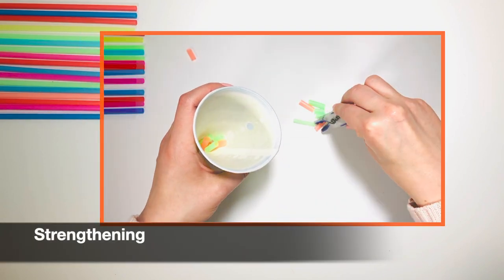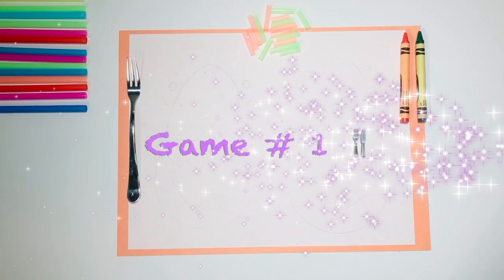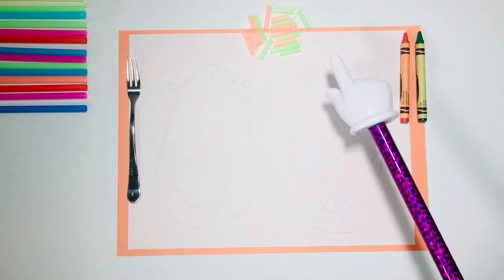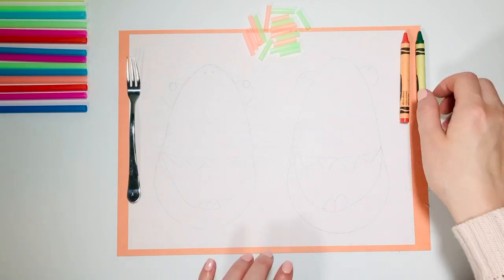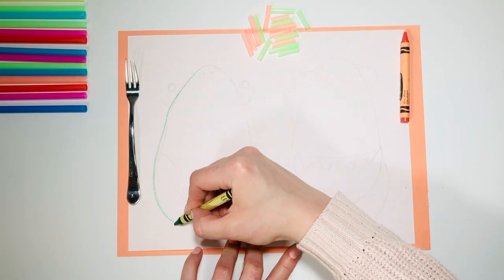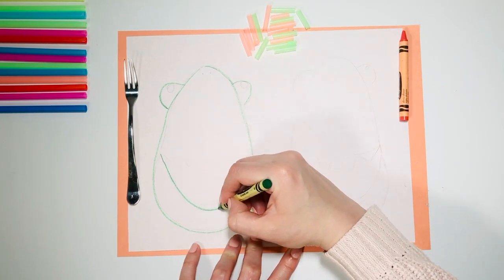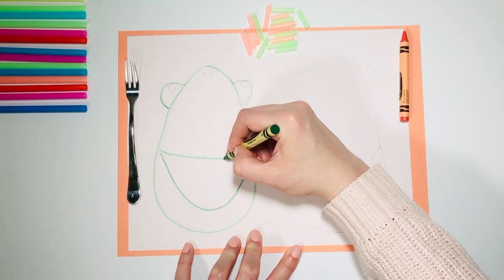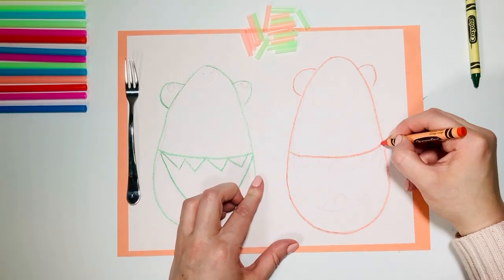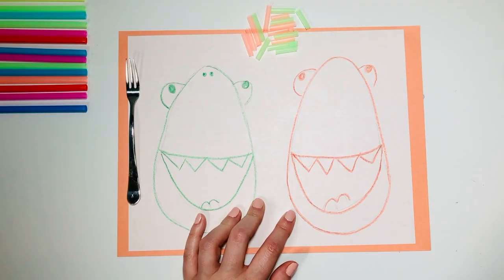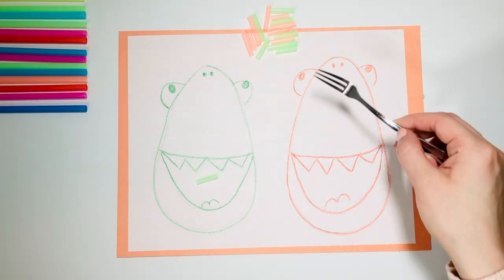For game number one you will need two crayons, cut up straw, a small fork, and a piece of paper. On the paper, draw the character that's desired by your student. In my case it's baby shark. I'm using green and orange to match the color of the cut-up straw. Next, use the fork to pick up your straws and place it in the mouth of the shark.